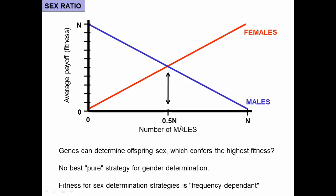The fitness of being male or female depends on how many males or females there are. When males become common, being female is favored, so the population shifts back to more females. When there are more females than males, males are favored and the population shifts back. This gives an equilibrium at 50-50: any time a population has more than 50% males, selection favors mechanisms to generate female offspring; any time it has fewer than 50% males, selection favors producing more males.